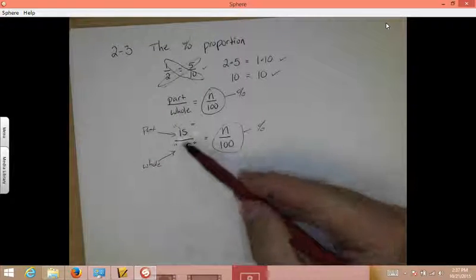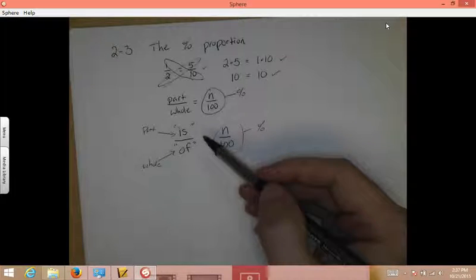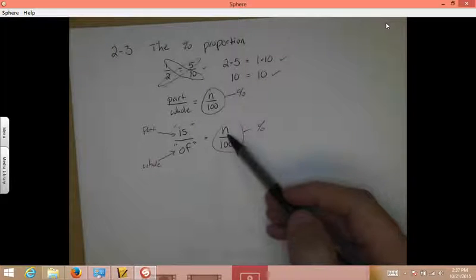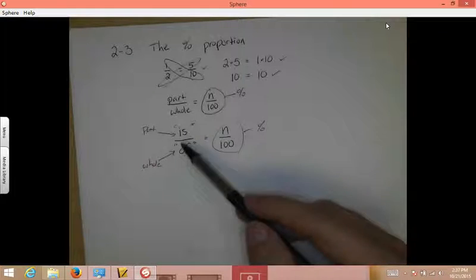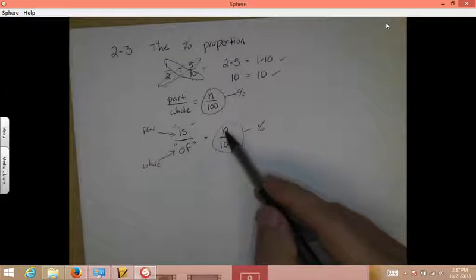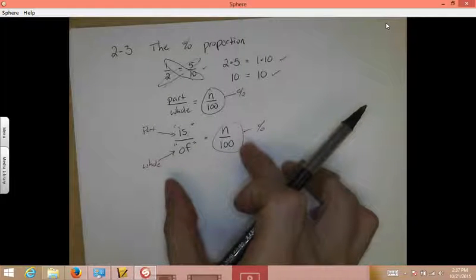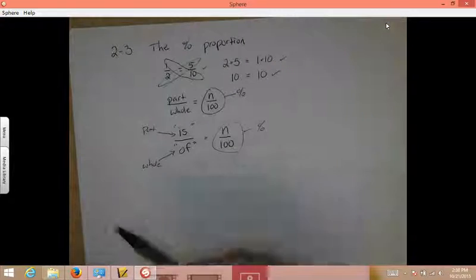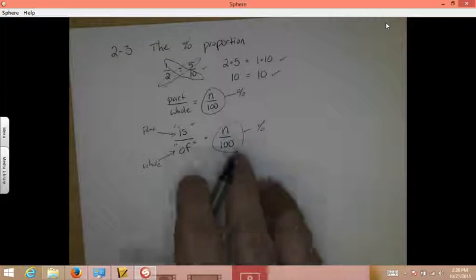Now, we're going to use these words, kind of like a way to crack the code of some word problems. So in the word problems, you're going to be given the percent, the is, the of. You're going to be given all but one of these things. What you're going to do is you're going to put everything you know in this pattern, in this formula, and then you're going to solve for the missing piece. First, I'm going to show you an example where you have everything. There's nothing to solve in this example at all. I'm just going to show you how to fit the pieces where.